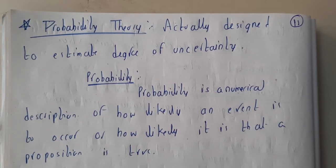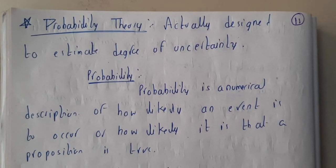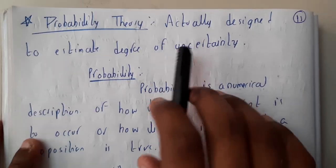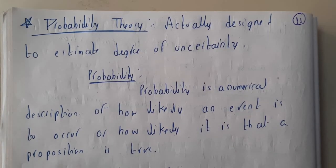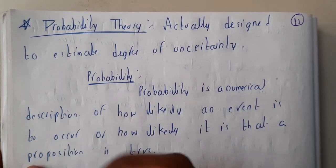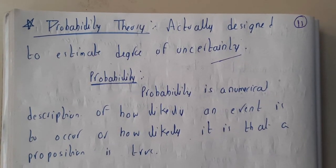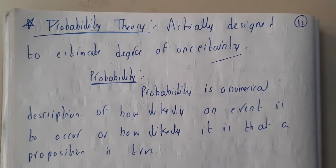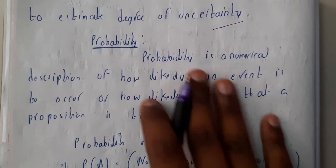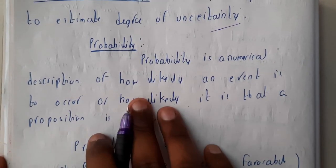It gives the number of outcomes - favorable outcomes by total number of outcomes. If you want to specify in terms of a formula, probability theory is actually designed to estimate the degree of uncertainty, so how our values will be gotten.